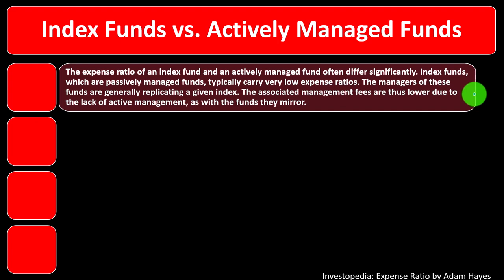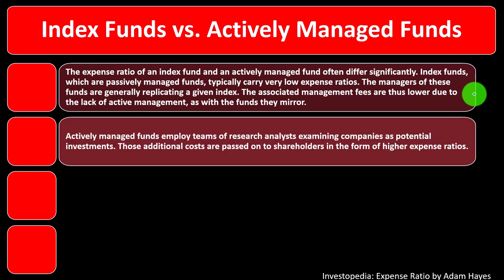Index funds, which are passively managed, typically carry very low expense ratios. The managers of these funds are generally replicating a given index, so associated management fees are lower due to the lack of active management. Actively managed funds, on the other hand, employ teams of research analysts examining companies as potential investments, and those additional costs are passed on to shareholders in the form of higher expense ratios.